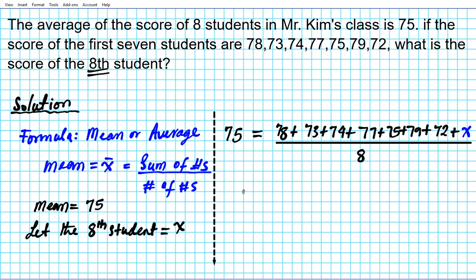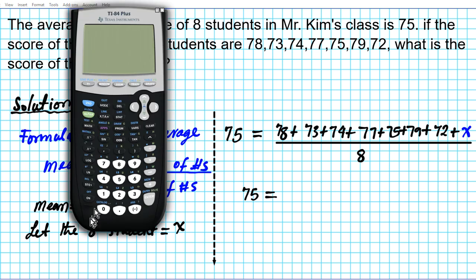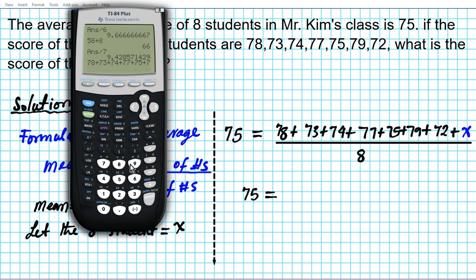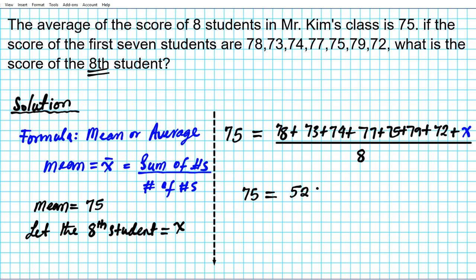Let's go ahead and simplify this algebraic equation. We have 75 equals — now adding 78 plus 73 plus 74 plus 77 plus 75 plus 79 plus 72, we get a total of 528. So we have 528 plus X, divided by 8.